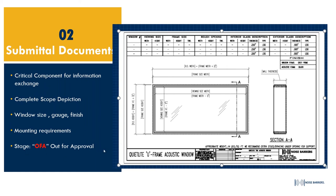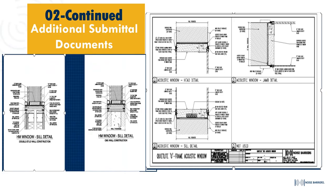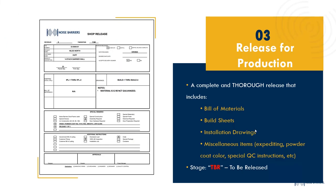The submittal is then sent out for approval. Additional submittal documents you'll receive with the window package include sill details describing the installation context — stud wall, drywall, attachment points. Glass thickness and wall thickness are critical and should be verified in the field, because once the window is made, you can't shrink it. These are things we want to address early, make changes as we go, and ensure the drafter has everything needed.